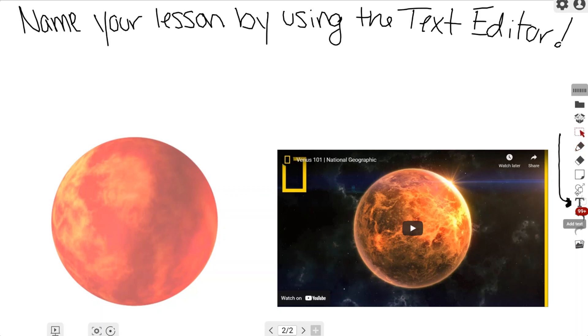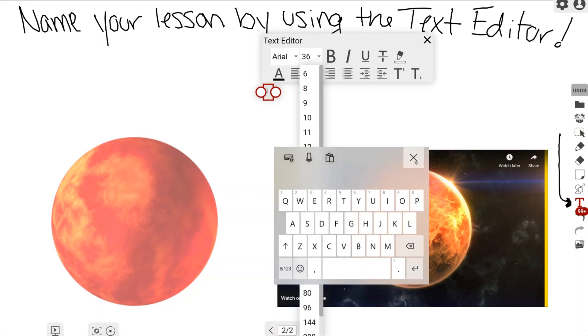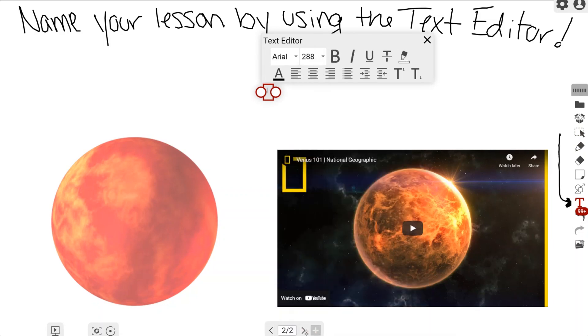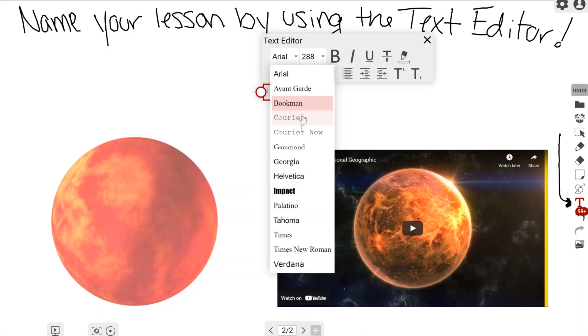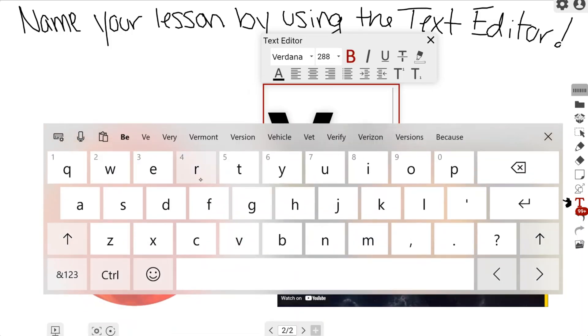I'm going to find the text editor on the right-hand side, that giant T. In here, it looks exactly like Google Docs or Microsoft Word's editor. I can change the font, change the font size, make it bold, or do a number of different things. But from here, I'm just going to type in the title.